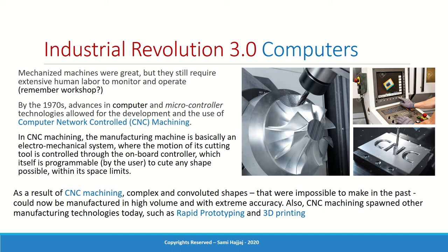In CNC machining, the manufacturing machine is essentially an electromechanical or mechatronic system. The motion of the cutting tool is controlled by an onboard controller, which can be programmed by the operator to produce any complex shape within its space limit. You write the program to generate the complex shape, and the machine does it for you. CNC machining also led to the development of rapid prototyping and, in recent years, 3D printing.